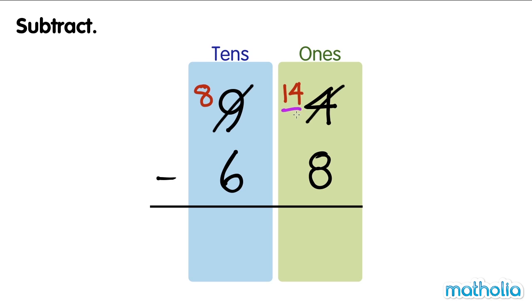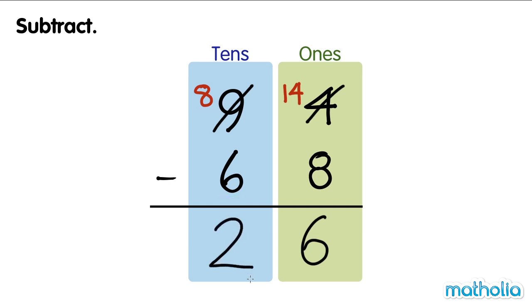14 ones minus 8 ones equals 6 ones. Next, subtract the tens. 8 tens minus 6 tens equals 2 tens. 94 minus 68 equals 26.